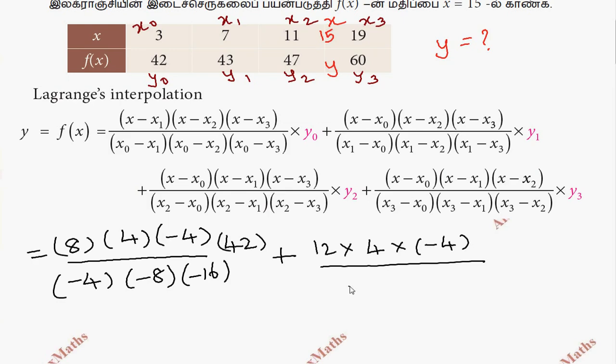The second term: (x minus x naught)(x minus x2)(x minus x3) divided by (x1 minus x naught)(x1 minus x2)(x1 minus x3) times y1. That is (15 minus 3)(15 minus 11)(15 minus 19) divided by (7 minus 3)(7 minus 11)(7 minus 19) which equals 12 times 4 times minus 4 divided by 4 times minus 4 times minus 12, then multiply by y1 which is 43.